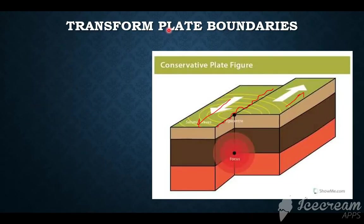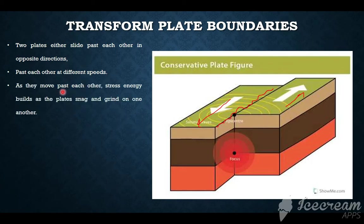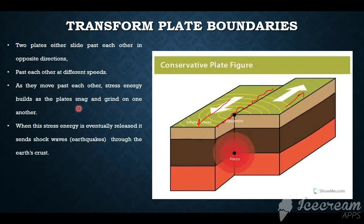Lastly, we have the transform plate boundary. With the transform plate boundary, plates slide past each other — either in opposite directions or at different speeds. As they move past each other, stress energy builds as the plates snag and grind onto one another. The plates aren't always moving; they tend to snag because their edges are uneven. As they snag, pressure goes up. When this energy is eventually released, it sends shockwaves through the Earth's crust. Transform plate boundaries are mainly associated with earthquakes.